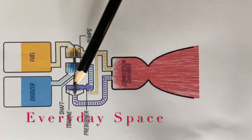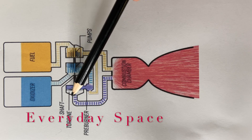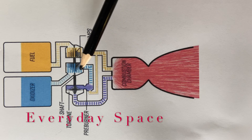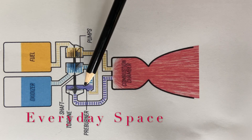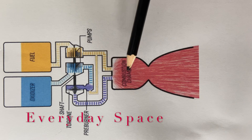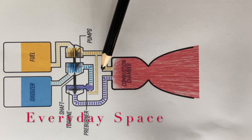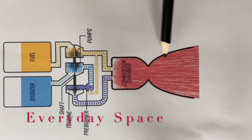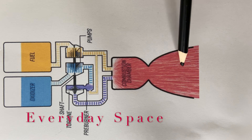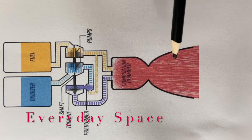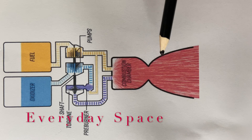After the pre-burner fires, the oxidizer-rich exhaust goes into a separate tunnel and then back into the combustion chamber. This is how all the oxidizer passes through the pre-burner and into the combustion chamber, while most of the fuel is already there without going through the pre-burner. A reaction then occurs, and the nozzle speeds up the exiting particles to produce thrust.